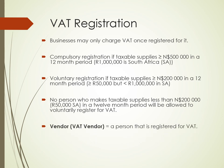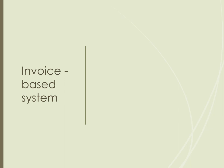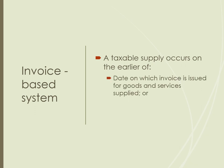A VAT vendor is someone who is registered for VAT, while a supply is the provision of goods or services in the ordinary course of business. For the purposes of recording a VAT transaction, the invoice-based system is used. Under this system, a taxable supply is deemed to have occurred at the earlier of the date on which the invoice is issued for goods or services supplied, or the date on which the payment is received.